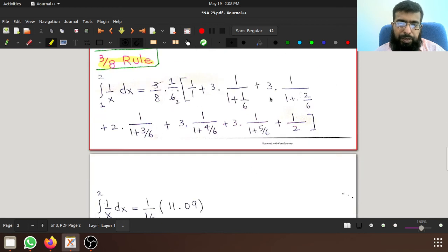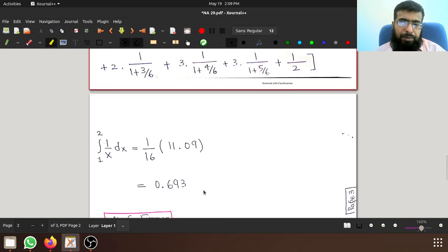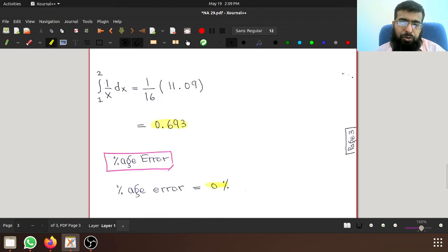And if we do that, we reach to an answer that is also 0.693. That's great. This means both Simpson's rules, the one-third rule and 3/8 rule, they both have given you 100% correct answer. The percentage error is zero percent in both cases.